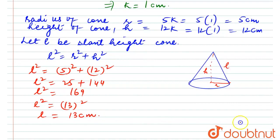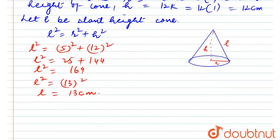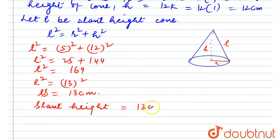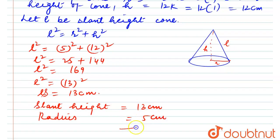So the slant height is also found. Slant height = 13 cm and radius of the cone = 5 cm. That's what we needed to find out. Thank you!